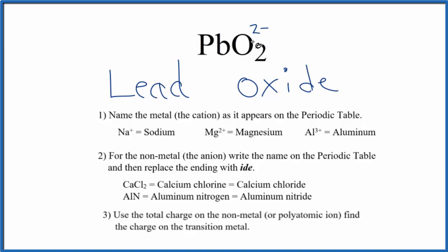Two times two minus, that's four minus. Lead has to be four plus. And the way we show that, we write the Roman numeral four between the lead and the oxide. So IV, and then we put parentheses around it, and the name for PbO2 is lead (IV) oxide.